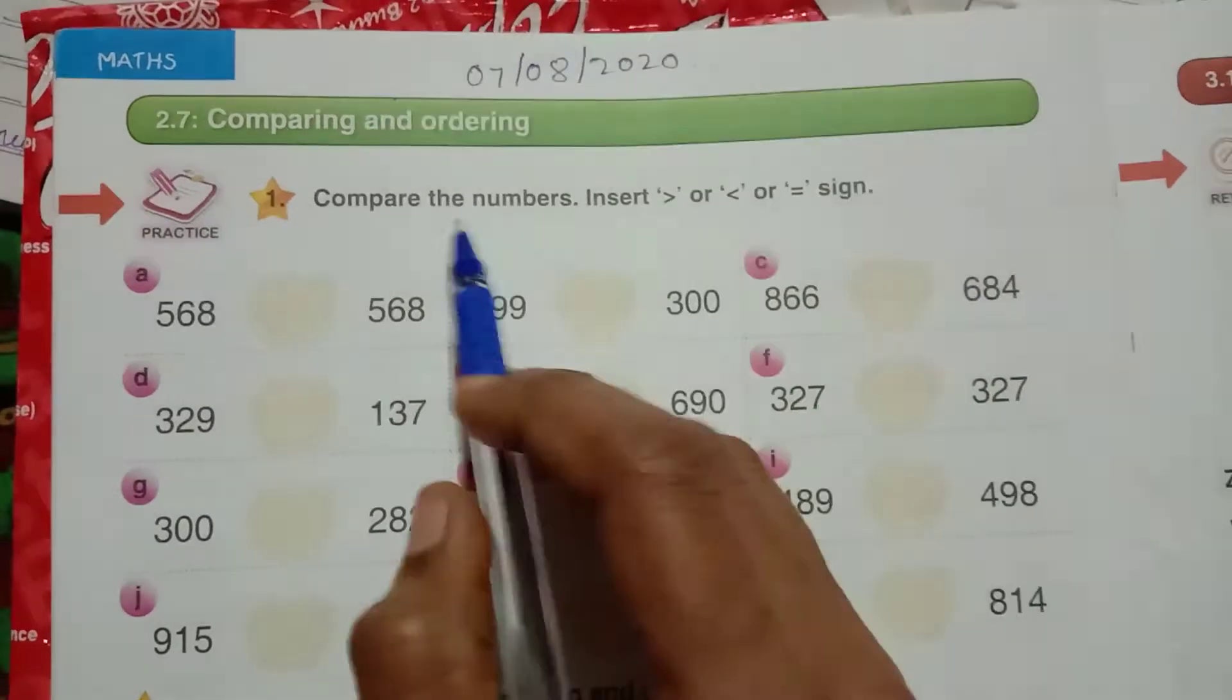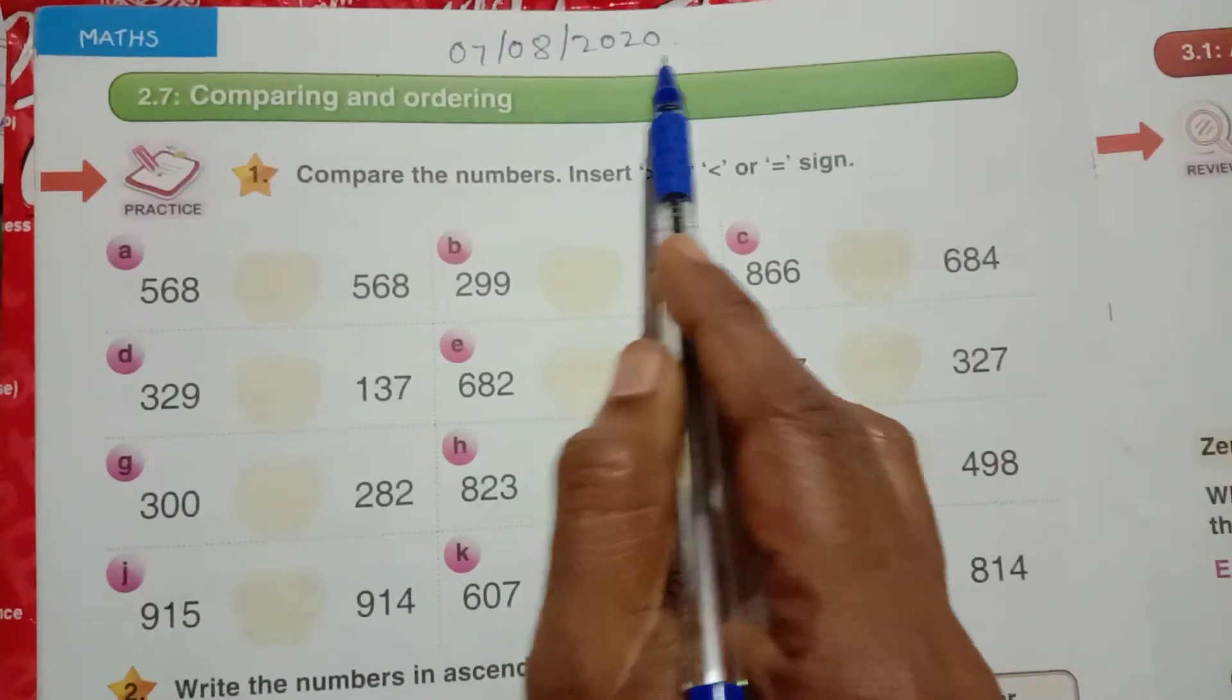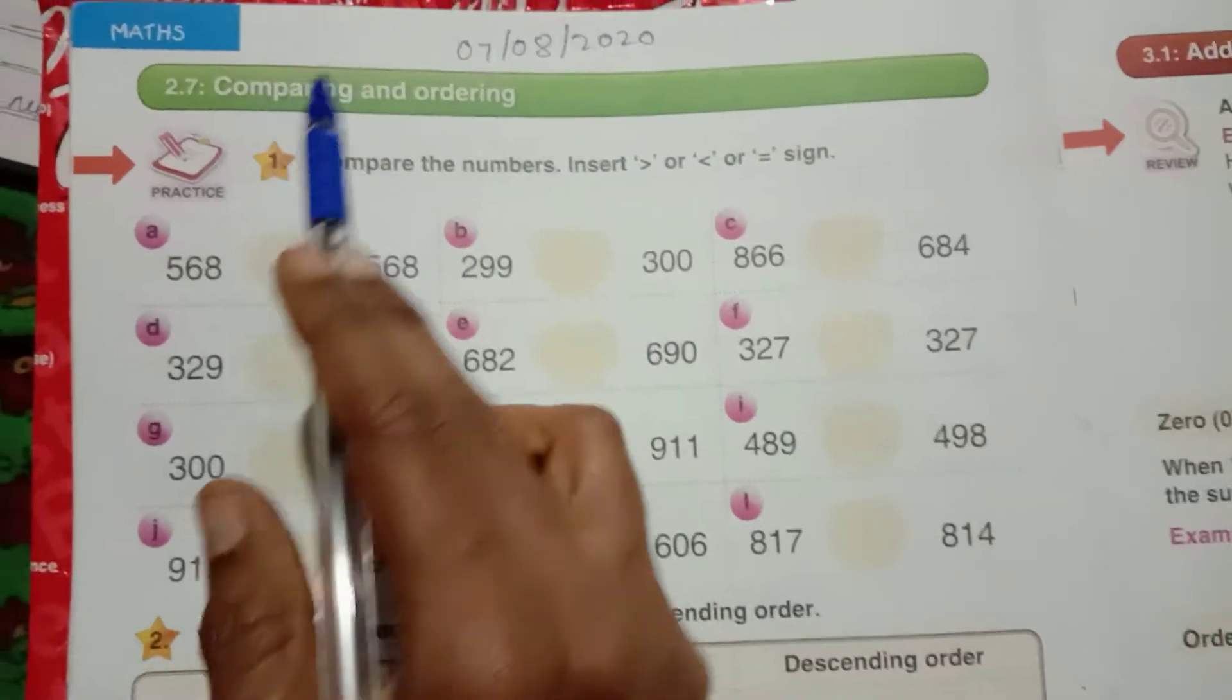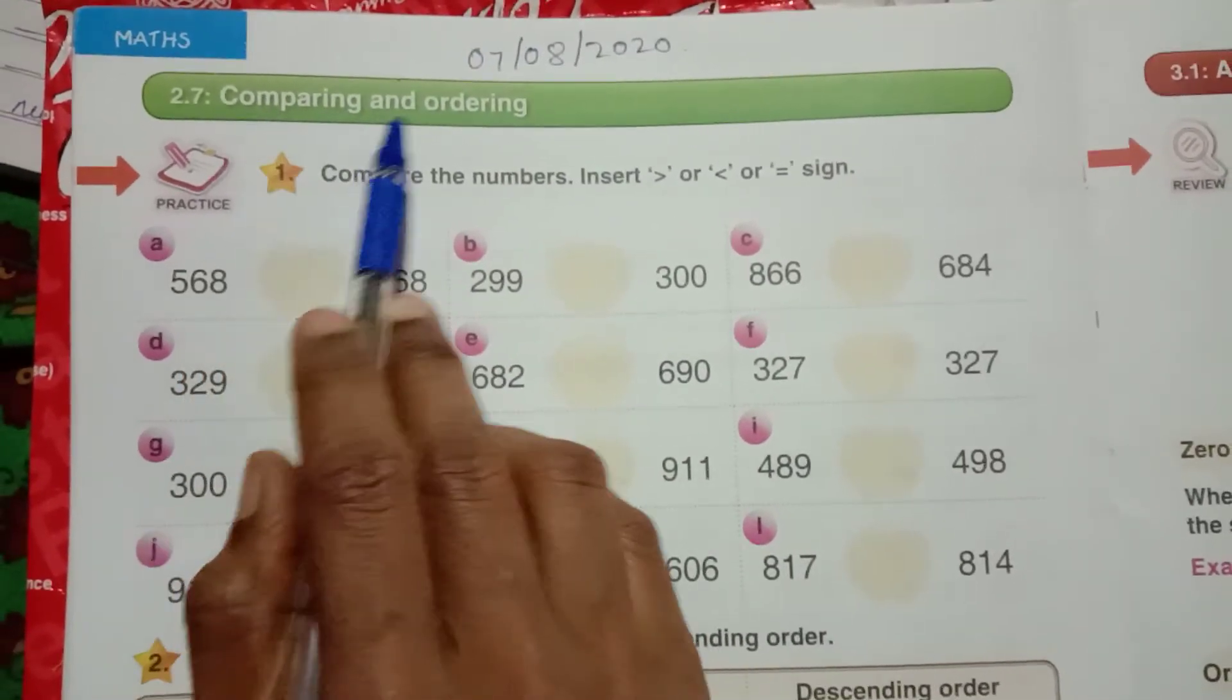Welcome to the online class. Today's date is 7-8-2020. In today's class we will continue with comparing and ordering.